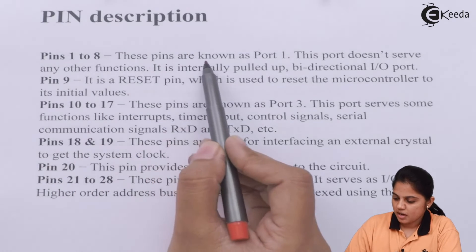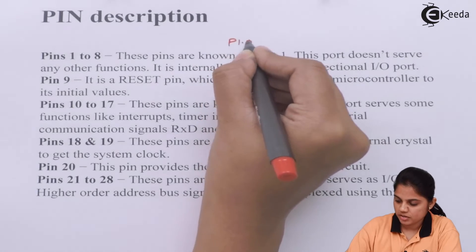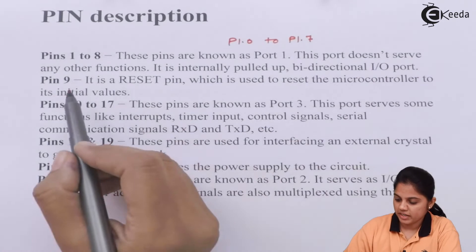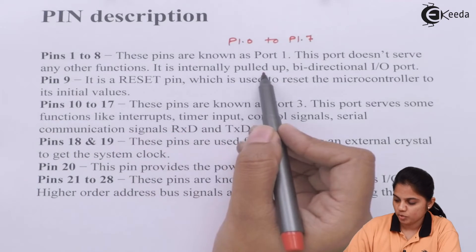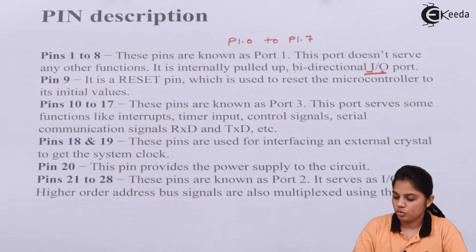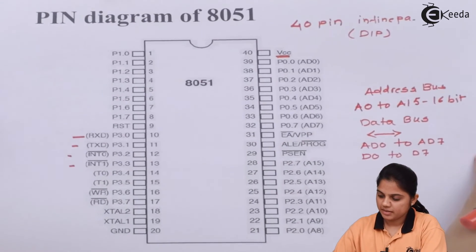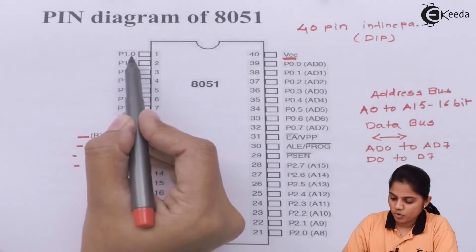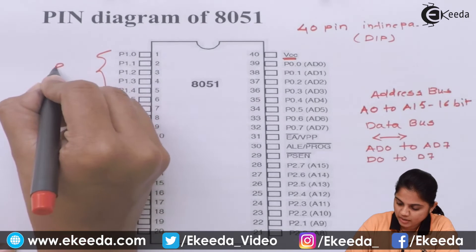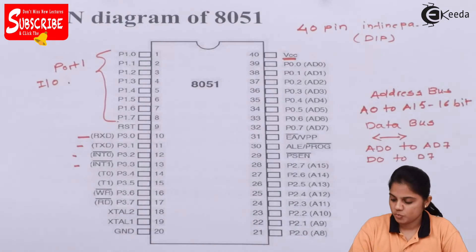Pins 1 to 8 are known as Port 1, given from P1.0 to P1.7. This port doesn't serve any other function — it is an internally pulled-up bi-directional I/O port. That means input and output devices can be connected to pin numbers P1.0 to P1.7.